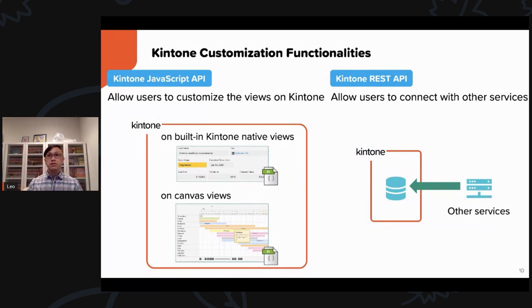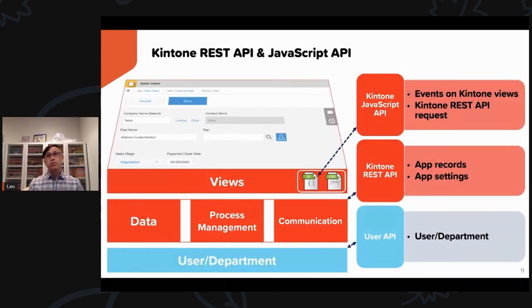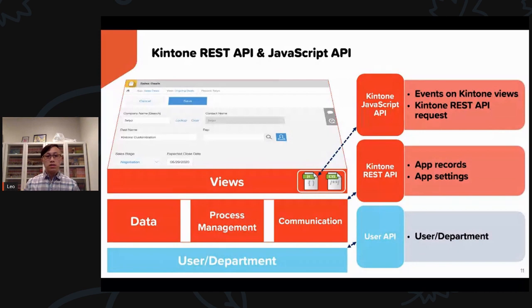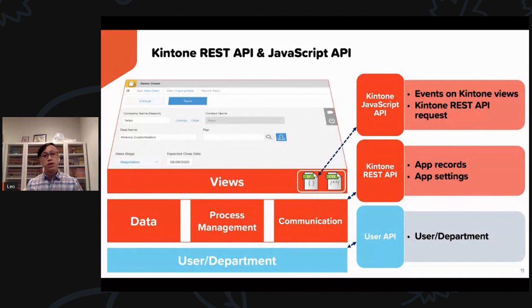There are two major tools for enhancement via the Kintone JavaScript API and the Kintone RESTful API. If you want to customize views, you will generally use Kintone's JavaScript API. Whereas if you are thinking about data, process management, communications, app records, or app settings, those are good use cases for Kintone RESTful API. There is also a user API which allows you to find or manipulate user department information in your subdomain, but we will not be covering that today.